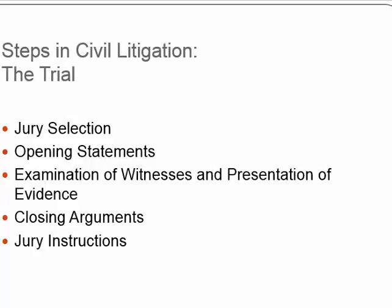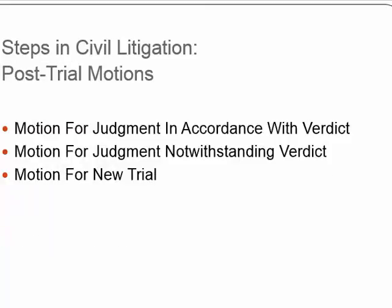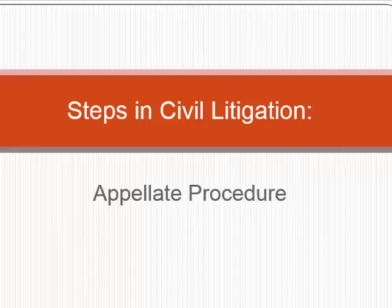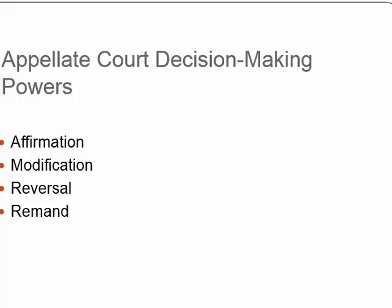At trial, you have opening statements, examining witnesses under oath, closing arguments, and jury instructions — letting the jury know what law they're applying to the facts of the case. For appellate procedure, once you've gone through the original trial and appeal to an appellate court, you cannot bring all those witnesses back again.